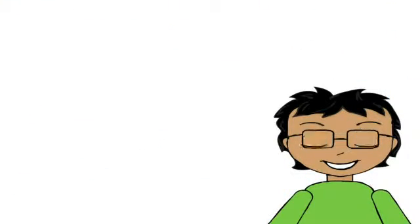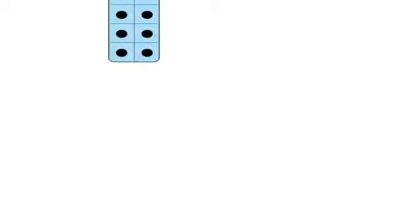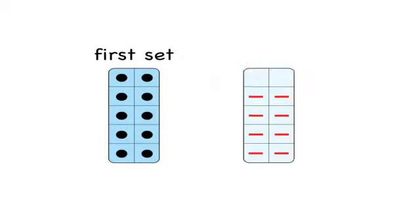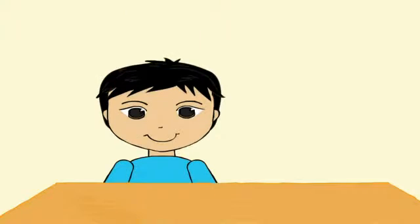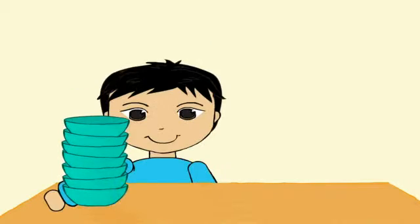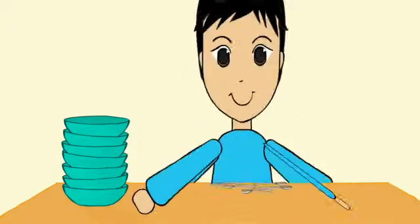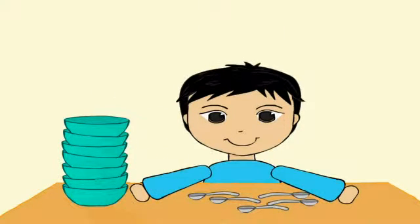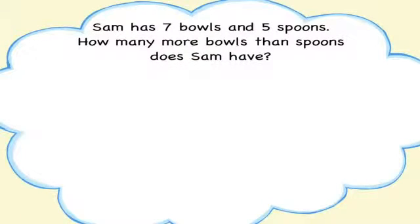Let's see how. Watch this. Subtraction tiles are a great way to model word problems that compare two amounts. Let's try this example: Sam has seven bowls and five spoons. How many more bowls than spoons does Sam have?